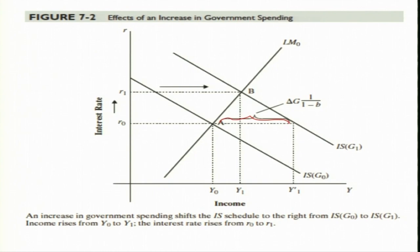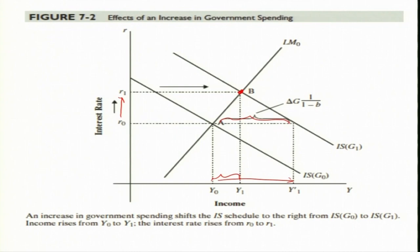However, as we outlined in the previous session, the rate of interest increases from R-naught to R-1, and instead of an increase in output from Y-naught to Y-epsilon-1, the increase in output is only Y-naught to Y-1, because the new equilibrium position is at B. What we have seen here is that due to the increase in government expenditure, the rate of interest has risen from R-naught to R-1, and as a result, the increase in the interest rate discourages private investment — a crowding out effect.